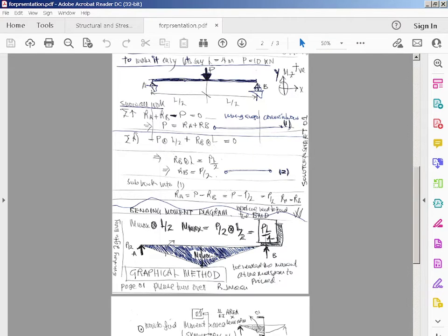For the moment area method, you need to find the area. We're looking for the deflection at the center, so we cut a section across to the middle. Then we need to find the area of the moment diagram. We know the max moment is at L over 2, and the maximum moment here is P over 2 times L over 2, which is PL over 4. We need the moment at mid-span to proceed.